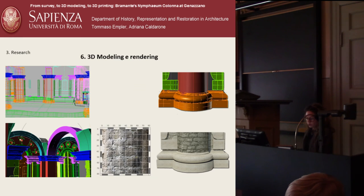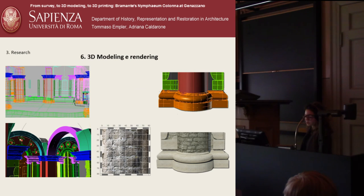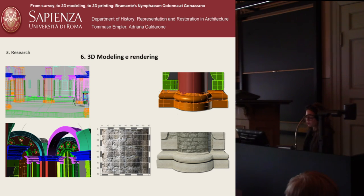We then moved to the modeling and rendering stage. First, by rebuilding the actual state based on the acquired data. Photogrammetry allows us to create bitmap textures used in the following rendering phase.